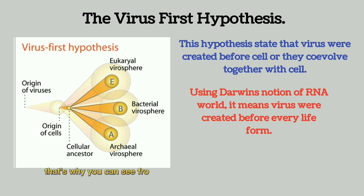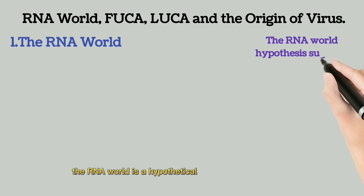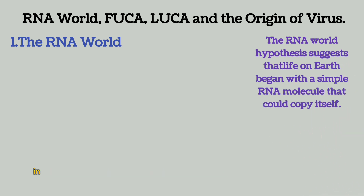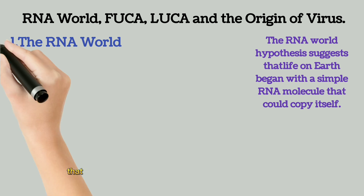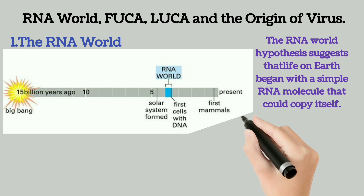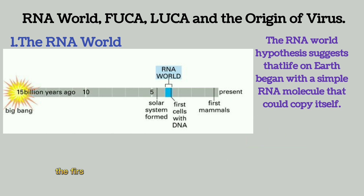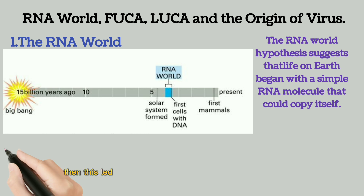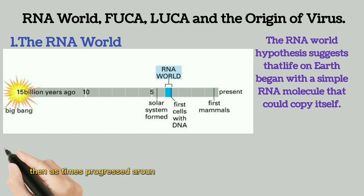As you can see from the diagram, these viruses come first before the cells. The RNA world is a hypothetical stage in the evolutionary history of life on Earth in which self-replicating RNA molecules proliferate before the evolution of DNA and protein. This RNA world theory is related to the viral phase hypothesis, because it indicates that immediately after the formation of the RNA world, the first things to come into existence were RNA then DNA viruses, then protein. This led to the formation of the First Universal Common Ancestor, and then around 3 billion years back, the Last Universal Common Ancestor.